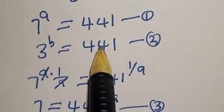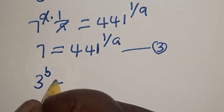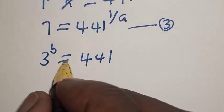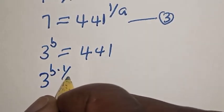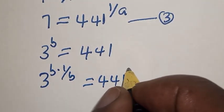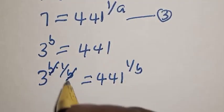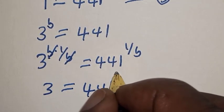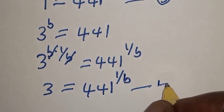Also, from equation 2, we have 3 raised to power b is equal to 441. Let's multiply the exponent of both sides by 1 over b. 3 raised to power b multiplied by 1 over b is equal to 441 raised to power 1 over b. This will cancel, giving us 3 is equal to 441 raised to power 1 over b. Let's call this equation 4.